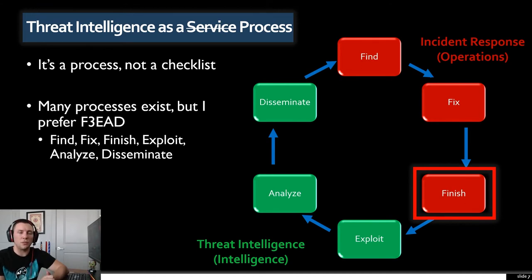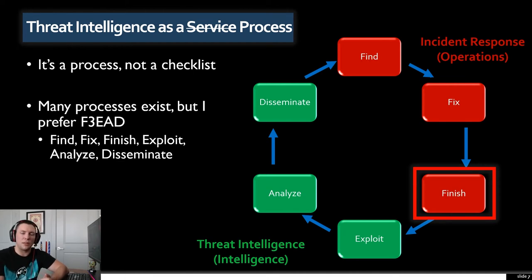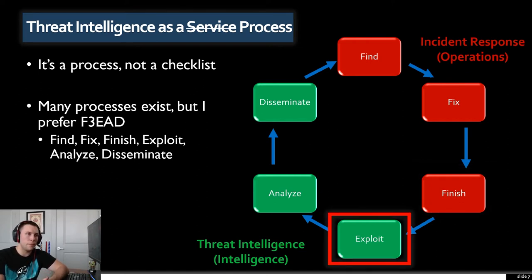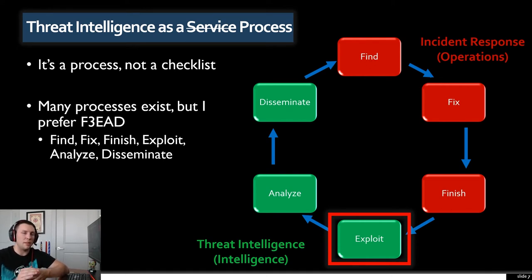That brings us to the Finish phase, which as the name implies is where you finish off the enemy — taking IR actions to remove any footholds they have in the network, and hopefully collecting malware samples, PCAP files, and anything else useful for the threat intelligence phase. We then cross over into the Exploit phase, where you collect all that information. At this stage it's still threat information — raw data — so you want to collect as much data as possible so you can take it into the Analyze phase and turn it into intelligence.